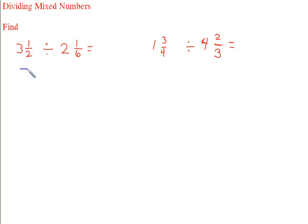This is going to be 7 over 2 divided by, this is going to be 13, remember, 2 times 6 plus 1 is going to be 13 over 6. So now I've flipped this second one. I can do that now that I've got it in an improper fraction, 6 over 13.